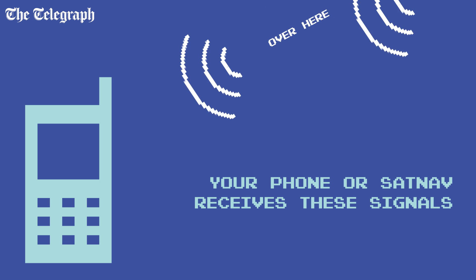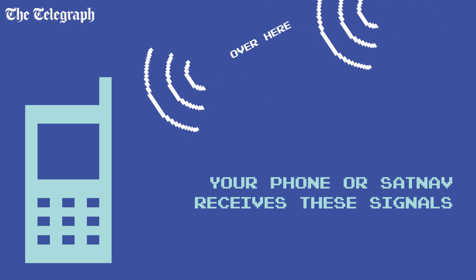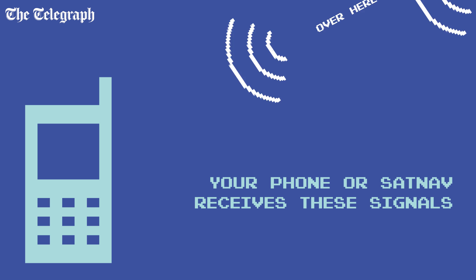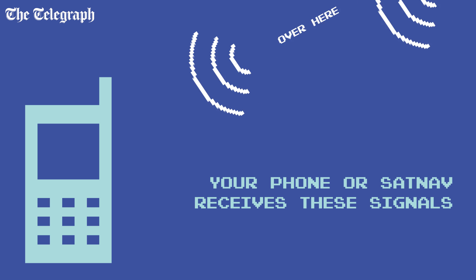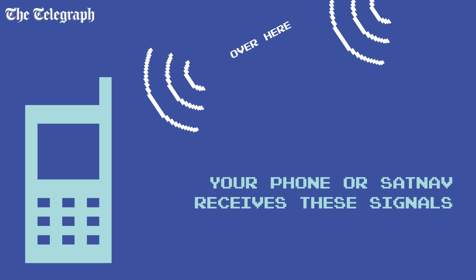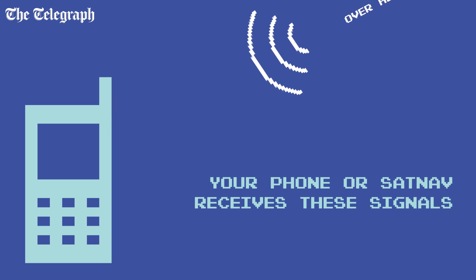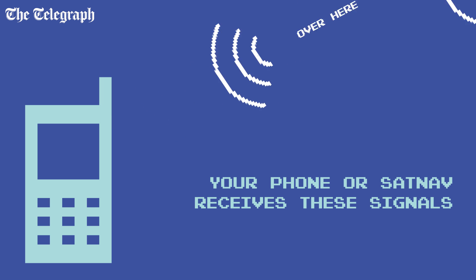When it receives a signal from one satellite, the GPS compares the time it received the signal to the time it was sent, and uses this to find the distance to the satellite.